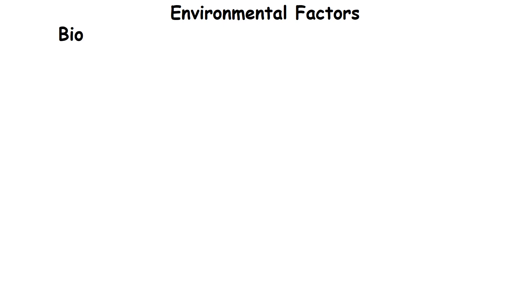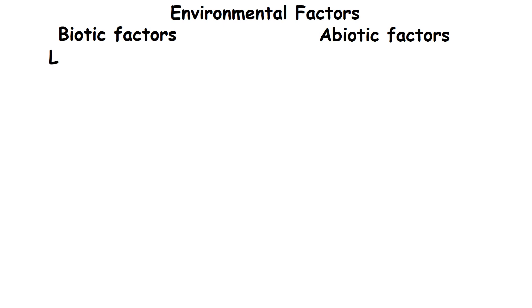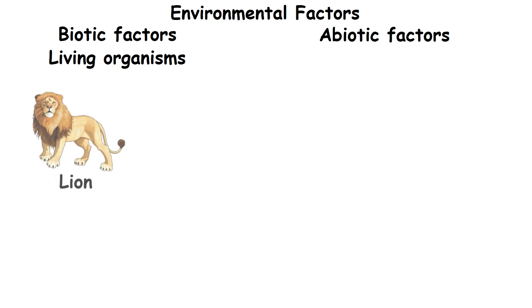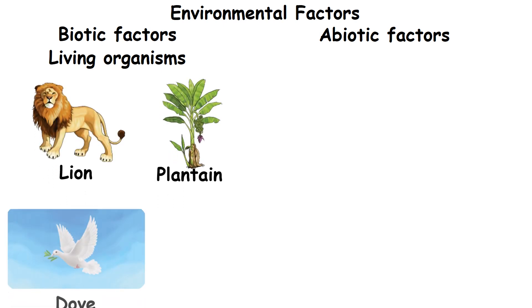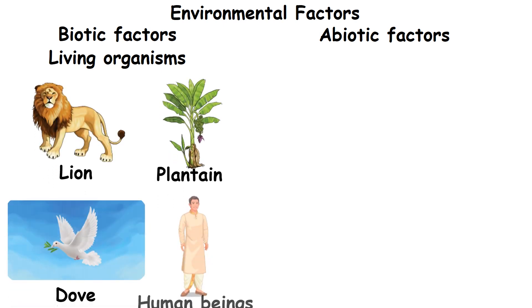Our environment has biotic factors and abiotic factors. Living organisms in our environment are called biotic factors. Examples include lion, plantain, dove, human beings, etc.